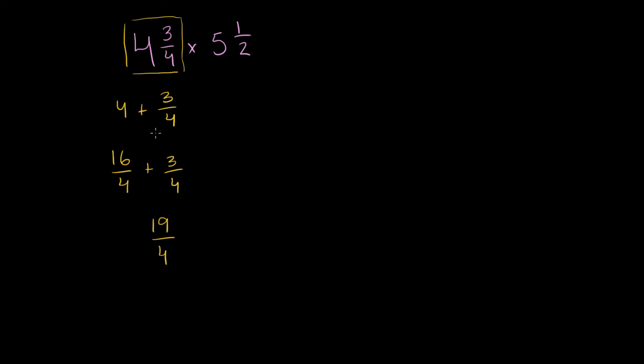A quicker way or a way that would take less space to do that, you'd say 4 times 4 is 16 plus 3 is 19, 19 over 4. And then let's do the same for 5 and 1 halves.